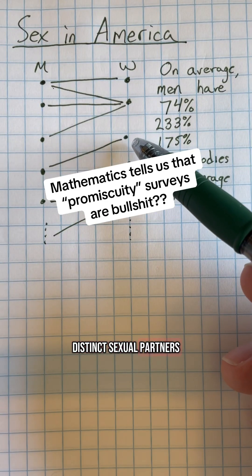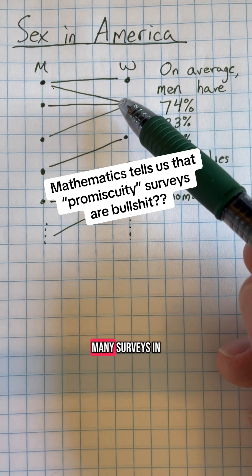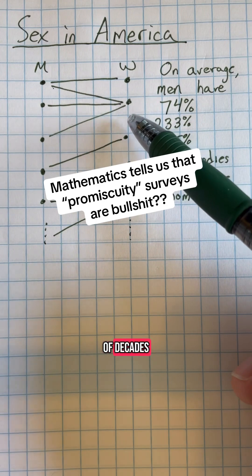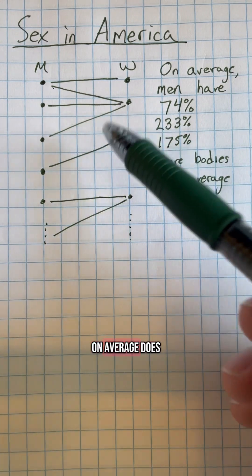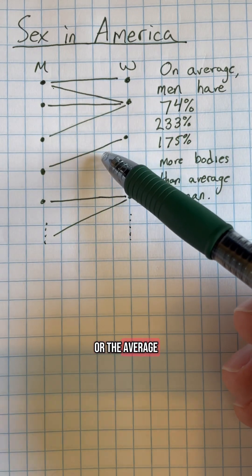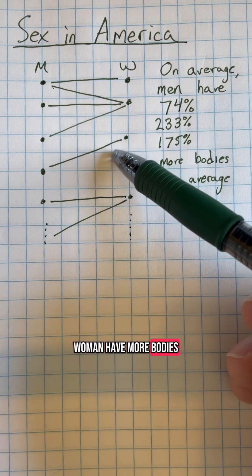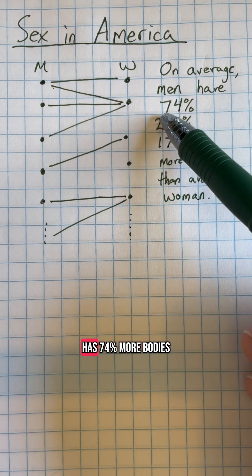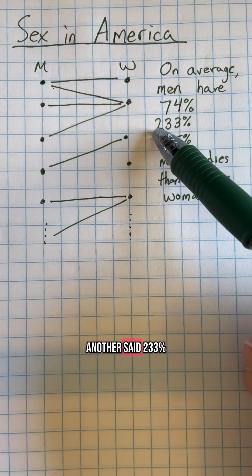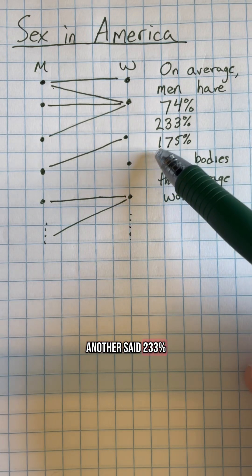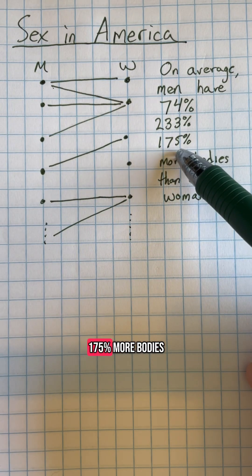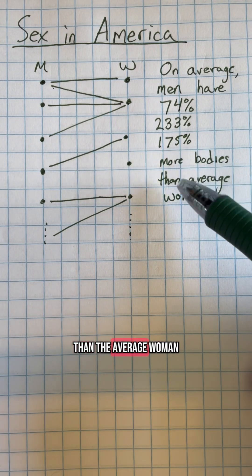Regarding the number of distinct sexual partners, there have been many surveys in the past couple of decades asking: on average, does the average man or the average woman have more partners? One particular survey said the average man has 74% more, another said 233%, and another said 175% more than the average woman.